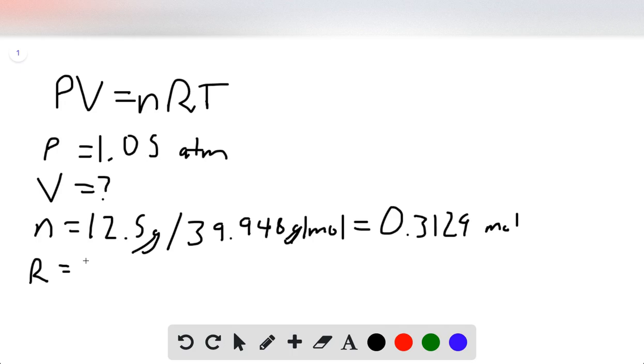Our R value in this case is going to be 0.082057, and the units for that are liter atmospheres per mole Kelvin. There are several different values for R, but the only difference is the units. Since we're looking for volume in liters, we have atmospheres, we have moles, and our temperature will be in Kelvin, we want to use this value for R.